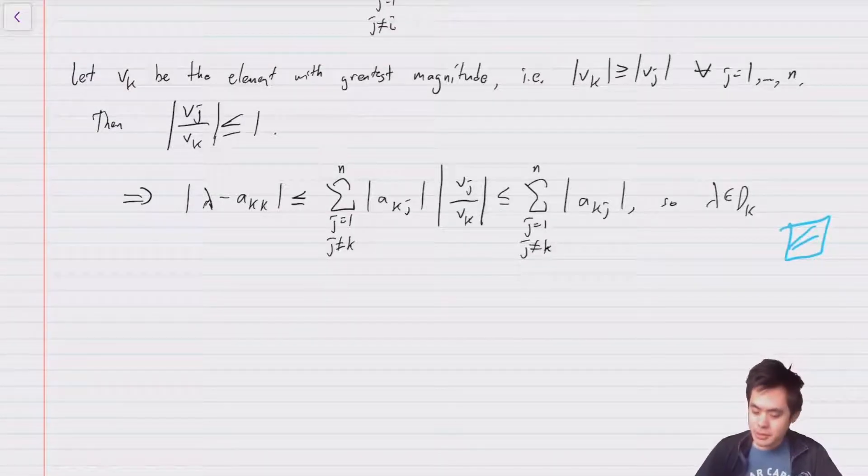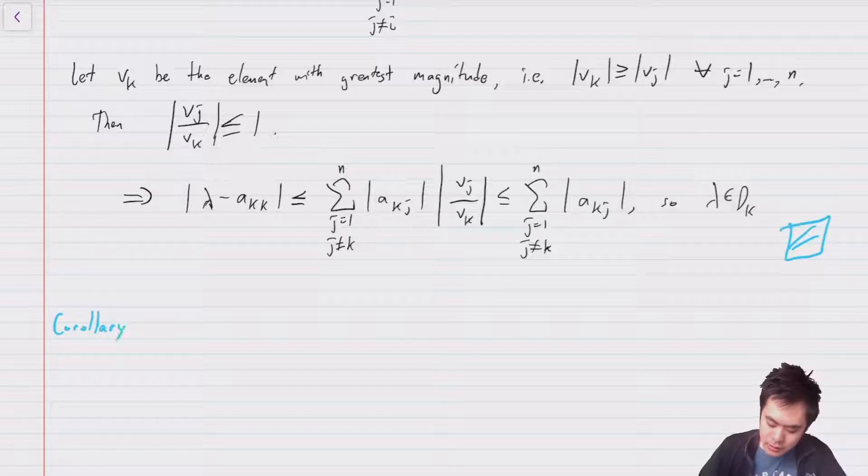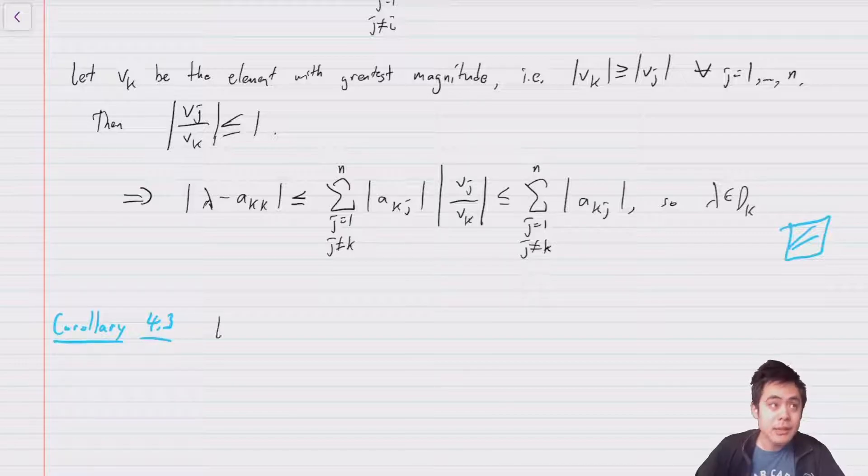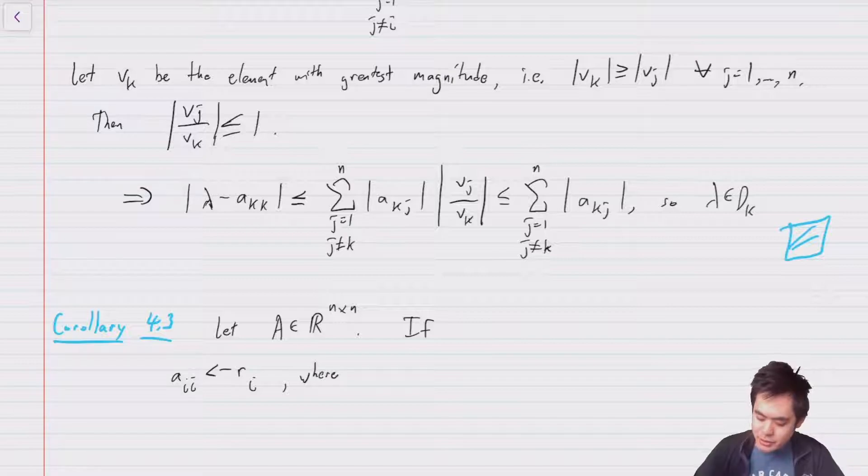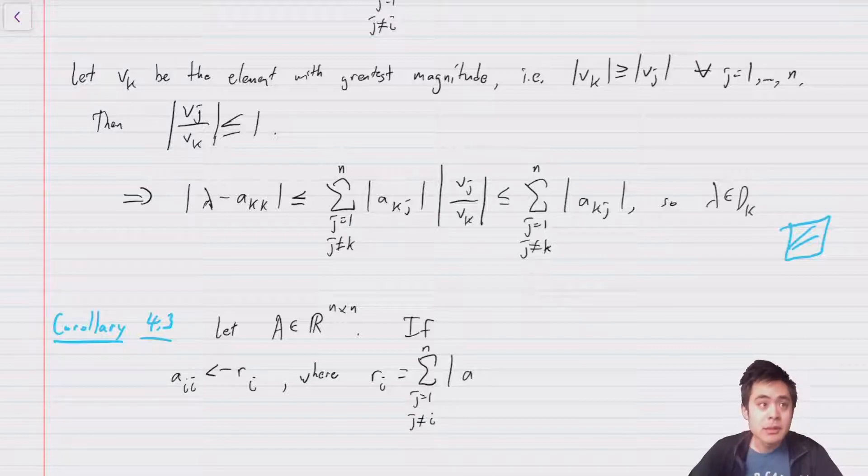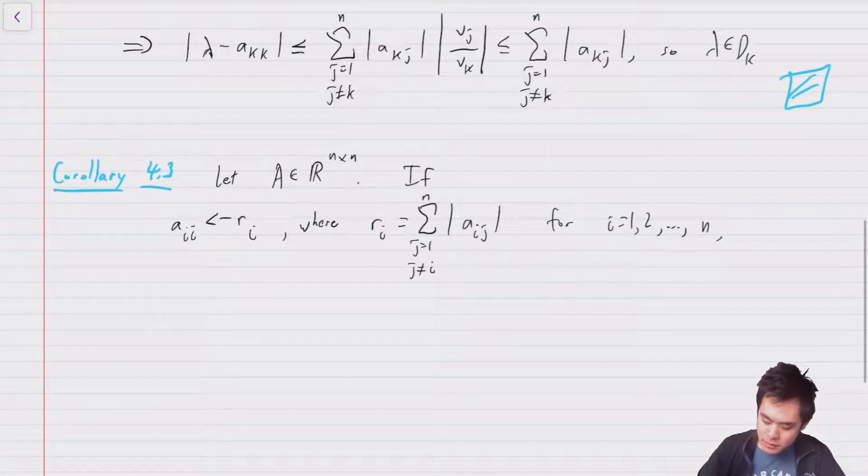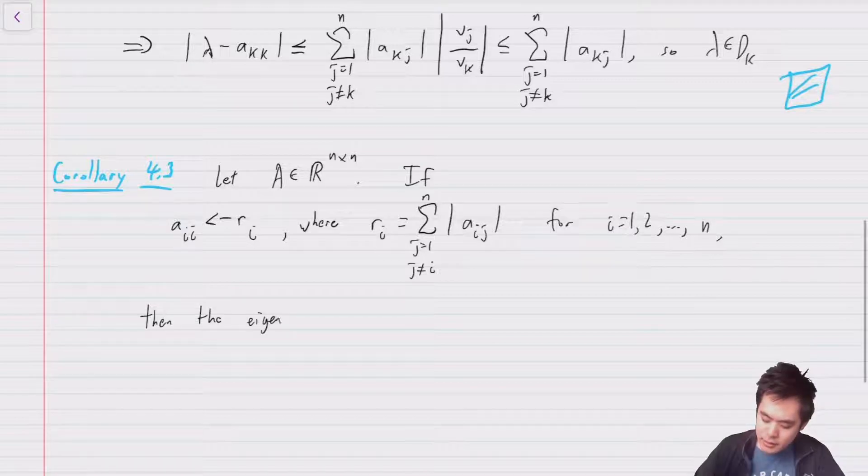And one of the nice easy corollaries, so this is corollary 4.3, is that if you let A be a real matrix, then if a_{ii} < -r_i where of course our r_i is defined in the same way as the radius, so this is Σ(j≠i) |a_{ij}|, and these are just normal absolute values because these are all real numbers now for i equal 1, 2 through n, then the eigenvalues of A have negative real parts.